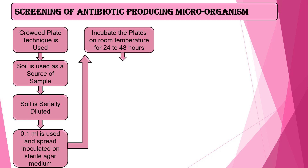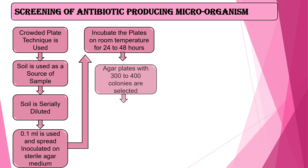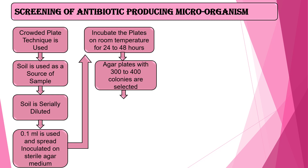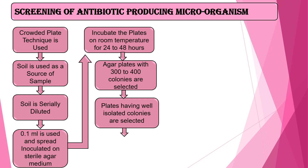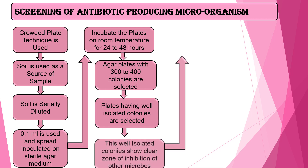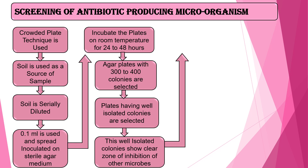These plates are incubated at room temperature for 24 to 48 hours. Agar plates with 300 to 400 colonies are selected, and the plates having well-isolated colonies are selected. These well-isolated colonies show a clear zone of inhibition of other microorganisms. This zone is due to the production of antibiotic — the colony releases its antibiotic in the surrounding vicinity, showing a clear zone of inhibition.